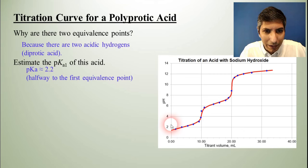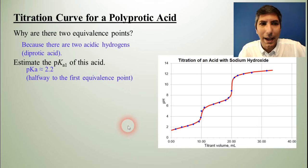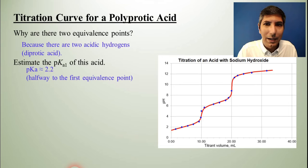And so that's why I have it listed as about 2.2. You may have estimated that a little higher or a little lower, but it's about 2.2, halfway to the first equivalence point. That's actually pretty neat that we can estimate the pKa, and as it turns out, the Ka as well from just looking at that titration curve.